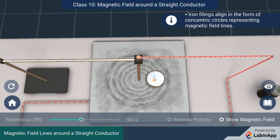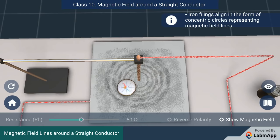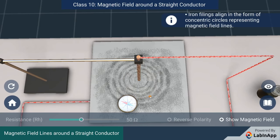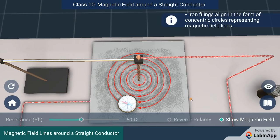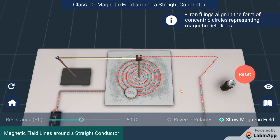By moving the compass away from the conductor, we can see that the deflection of the needle decreases. It indicates that the magnetic field decreases as the distance from it increases. It can be noticed by the larger circles formed away from the conductor.